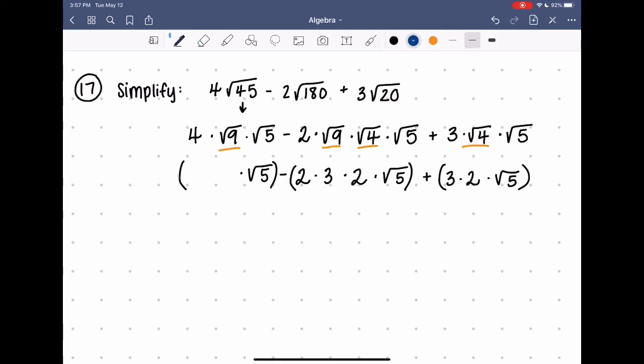This 4 times 3 can become 12. 2 times 3 is 6, times 2 is 12. 3 times 2 is 6.